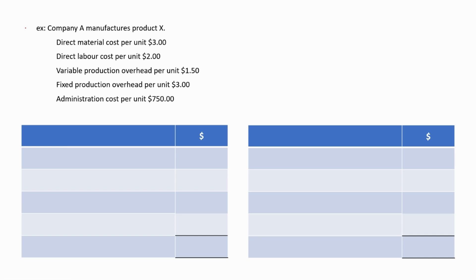Let's do this example so you can refresh your memory on marginal costing and absorption costing. Company A manufactures product X. The following costs are given: direct material cost per unit, direct labor cost per unit, variable production overhead per unit, fixed production overhead per unit, and administration cost per unit. Let's use this as the marginal costing cost card and this as the absorption costing cost card.